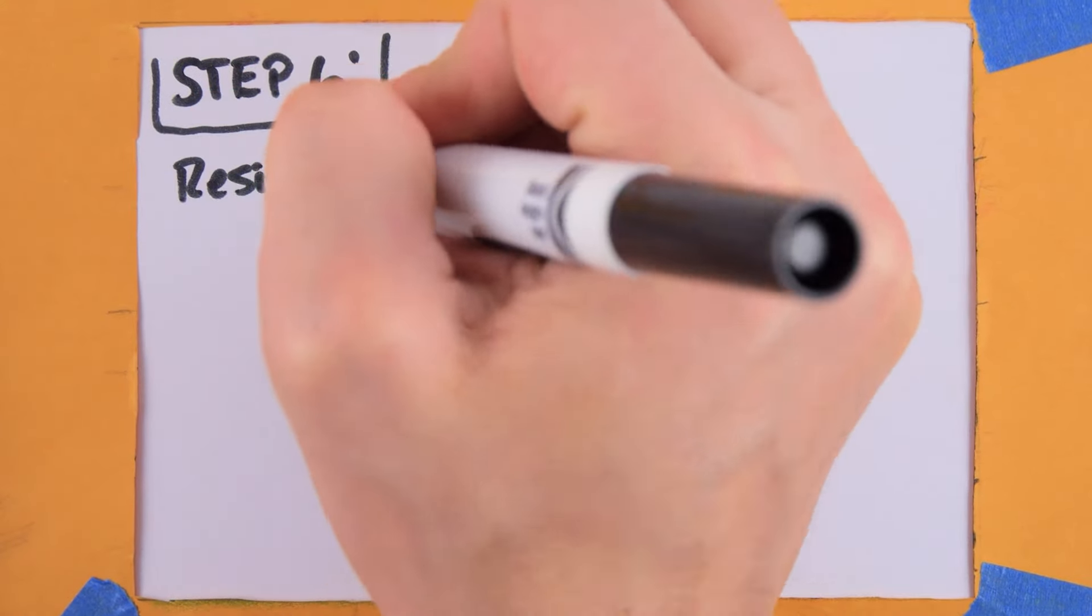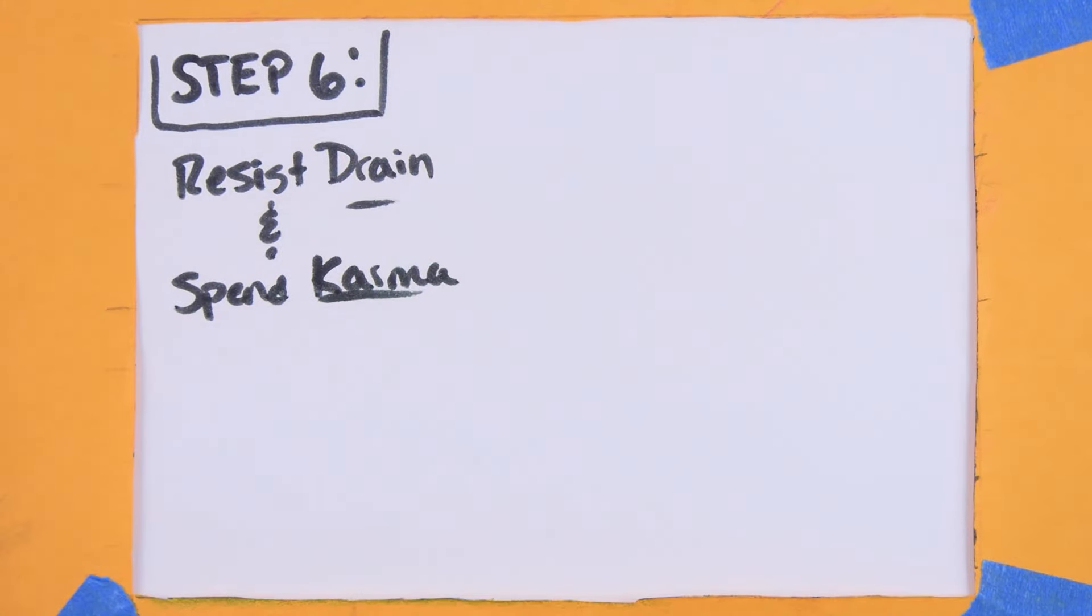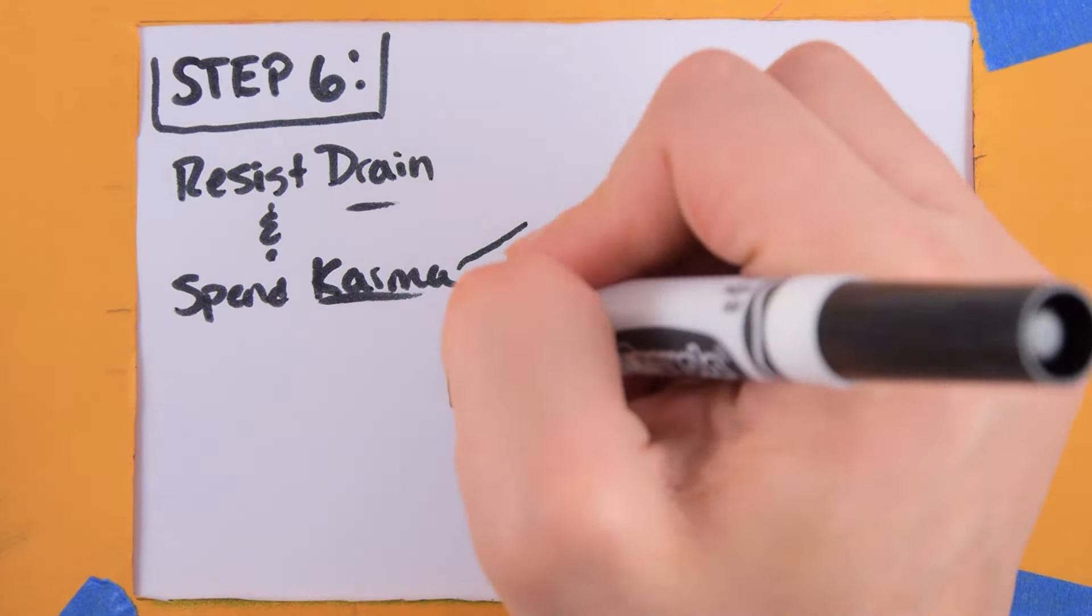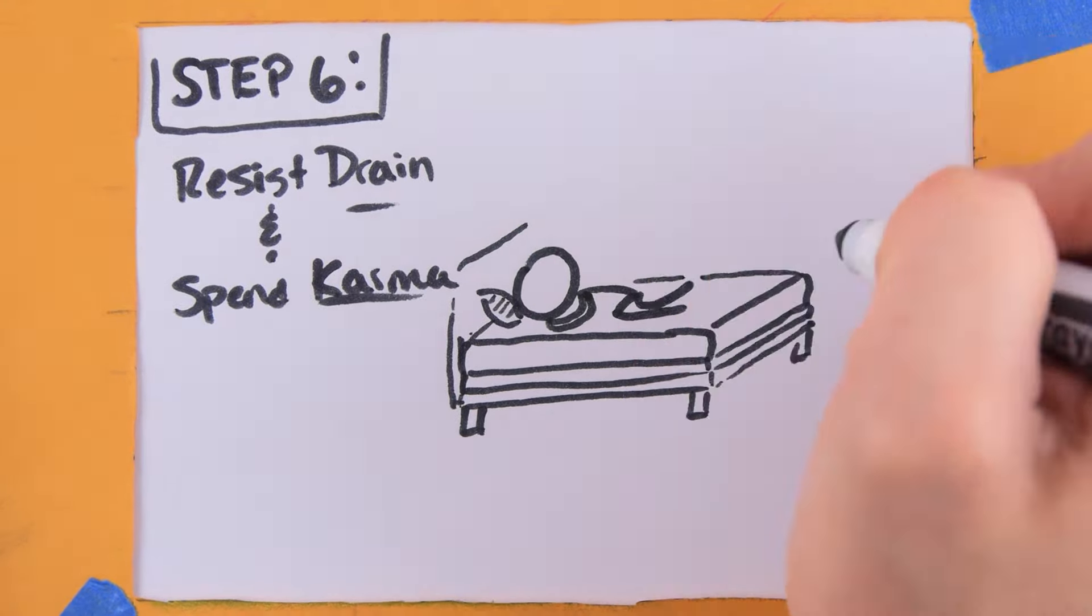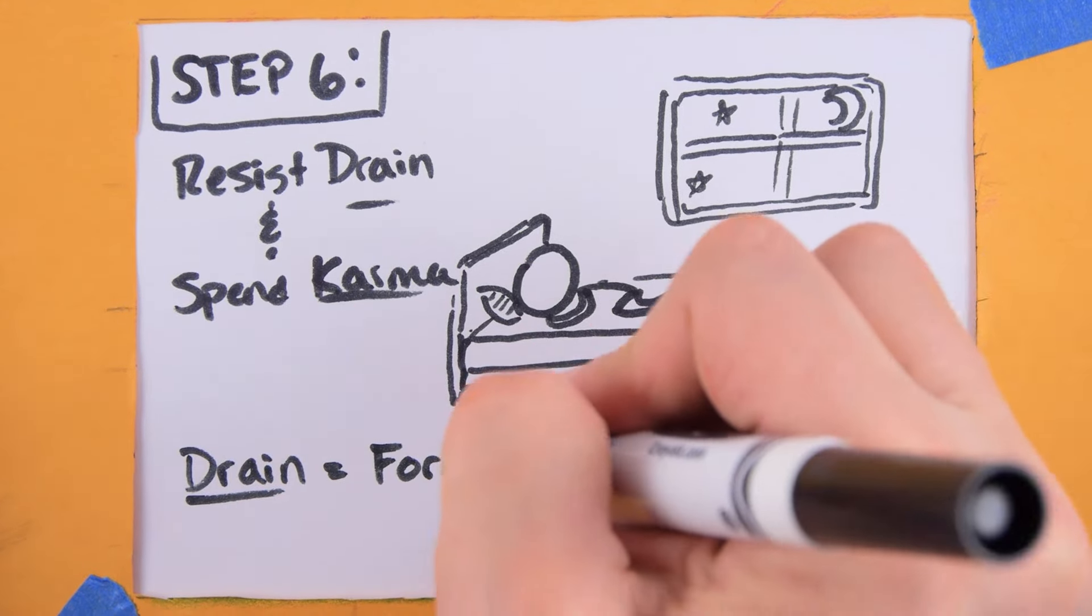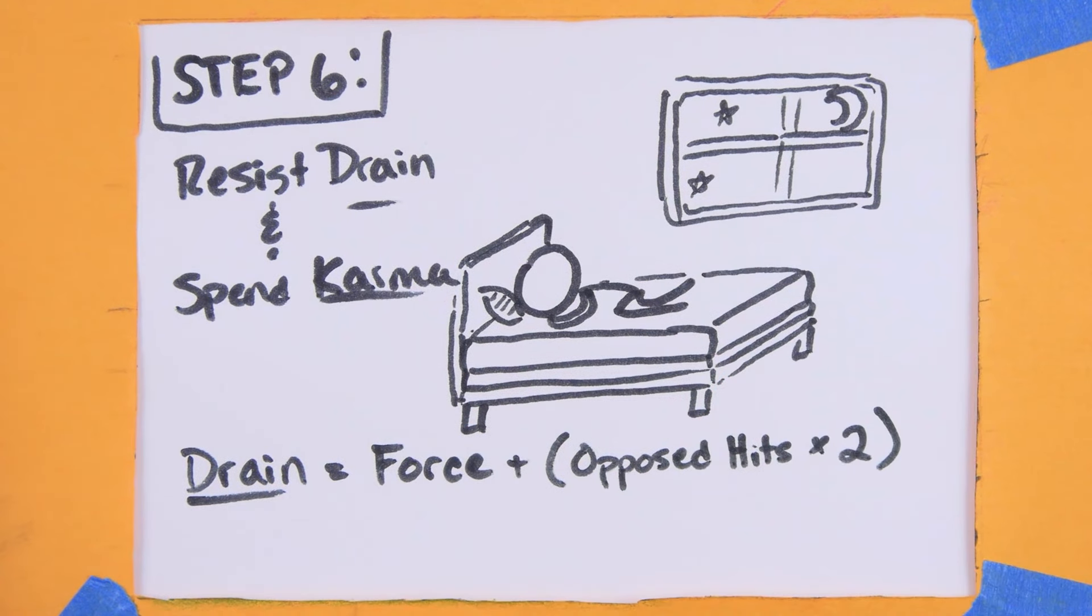Step 6: Resist drain and spend the karma. You must resist a number of boxes of drain equal to the force of the formula that was used, not the actual final force of the focus if it's different, plus two for each hit that was scored against you in Step 5. That's hits, not net hits.